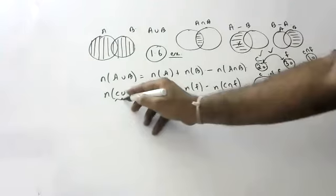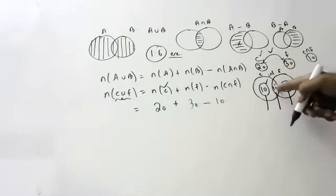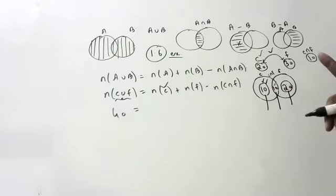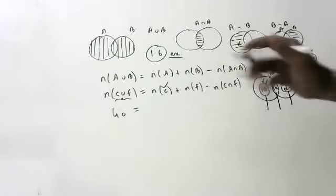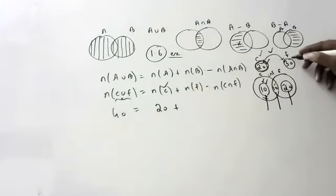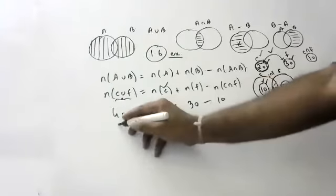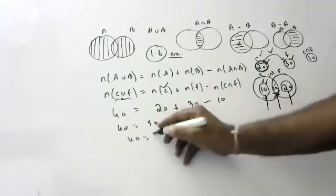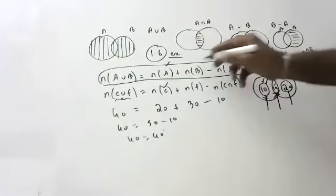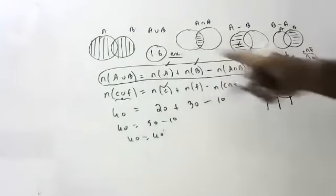So see here children: C intersection F means this 10 plus this 10 plus this 20. How much is coming? 10 plus 10 plus 20 is 40. I made a small mistake. Total elements in cricket is 20, total people who like football is 30. You remove the intersection — people who like both — which is 10. Then you get 40 equals 50 minus 10, that is 40 equals 40. This confirms the formula: N(A∪B) equals total elements of A plus total elements of B minus the common intersection, removing it one time, because it was counted twice.